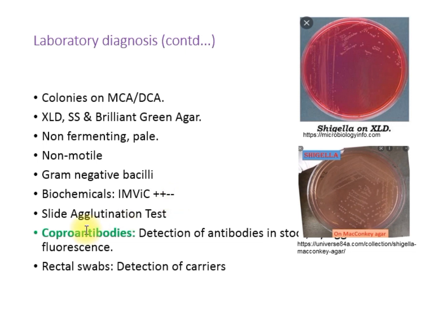Slides can also be done for agglutination, in which colonies are mixed with serum and observed for agglutination — this is the SAT (slide agglutination test). In dysentery, a rare finding is that antibodies are present in the feces; these are called copro-antibodies. These antibodies in the feces can be detected by fluorescence technique. The presence of antibodies in the serum is of no clinical significance.